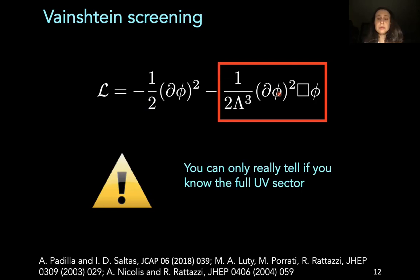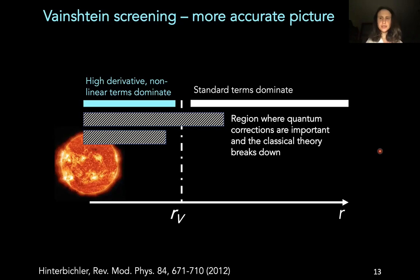And the truth is that you don't know. And you can only really tell if you know the full UV sector. So if you know this true fundamental theory that governs your field, then only in that case, you know whether this particular non-standard term is dominant and somehow all the others aren't. So let's then give a more accurate picture of Vainshtein screening. You will have a region where the standard terms dominate. You will have a region where your classical non-linearities dominate. These are the terms that give rise to your Vainshtein screening. And you have a third region, which is that where the quantum corrections are important and a classical theory breaks down. And so one key question is, where do you expect these quantum corrections to become important? Is it even before or after your classical non-linearities have had the time to dominate?